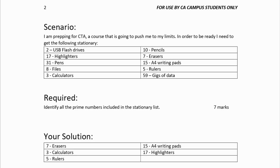I'm prepping for CTA — a course that is going to push me to my limits. In order to be ready I need the following stationery: 2 USB, 17 highlighters, 31 pens, 8 files, 3 calculators, 10 pencils, 7 erasers, 15 A4 writing pads, 5 rulers, 59 gigs of data. The required: identify all the prime numbers included in the stationery list — for 7 marks.